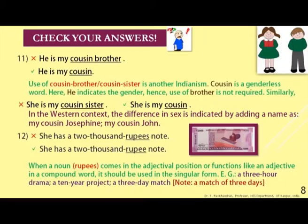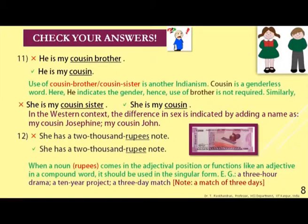In the western context, the difference in sex is indicated by adding a name. So they would be introduced as 'my cousin Josephine' or 'my cousin John', making clear whether the cousin is female or male. Some people also use expressions like 'female cousin' or 'male cousin' to show the distinction.